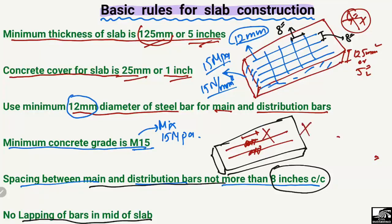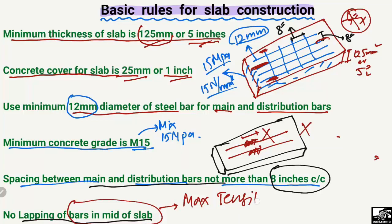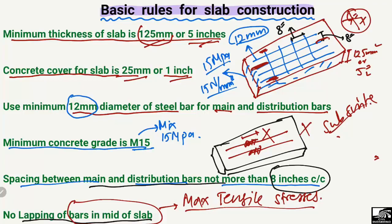We should always do the lapping of the steel bars at the sides or at the ends of the slab. We should not do lapping in the mid portion because here we always have maximum bending moment and maximum tensile stresses, so we need to avoid lapping in the mid section. Hope you guys understand the different important rules for the construction of slabs. Don't forget to subscribe to our channel for daily civil engineering videos — thank you for watching.